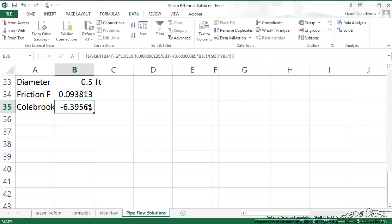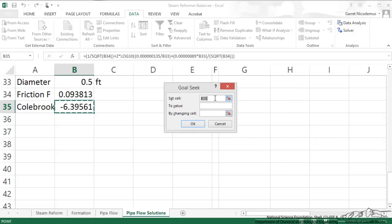So we go to data, what-if analysis, and goal seek. It may be different depending on the version of Excel you are using. We want to set this to zero. We want to do that by changing the diameter. You can also use solver to do this. Goal seek is pretty quick.